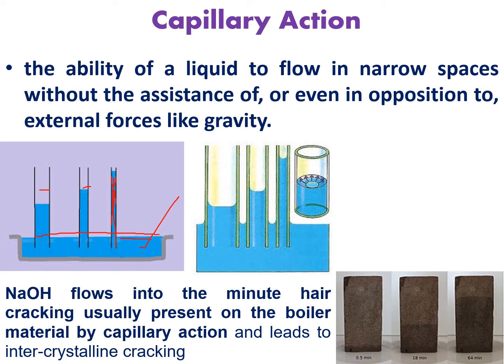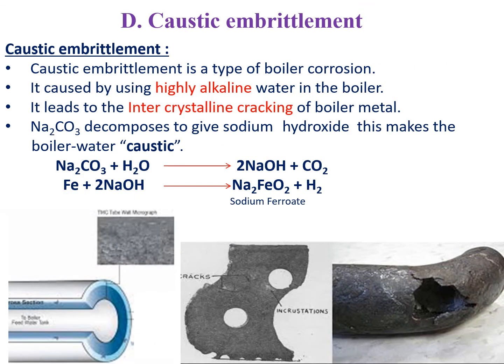Every metal has a porous texture — small minute holes on the surface. Boilers also have many such porous textures. If the water contains NaOH, that water has capillary action and will enter into these minute hair cracks, leading to intercrystalline cracking. This intercrystalline cracking is called caustic embrittlement, and it is also a type of boiler corrosion. It is very dangerous compared to regular boiler corrosion — while boiler corrosion due to O2, CO2, and mineral acids occurs on the surface, caustic embrittlement occurs internally.